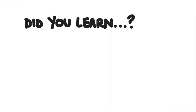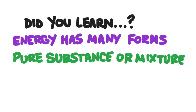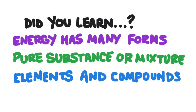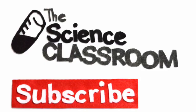So did you learn everything in this video? You learned that energy comes in many different forms. Matter can be found as a pure substance or as a mixture. There are two types of pure substances — elements and compounds. And there are two types of mixtures — homogeneous, which is the same throughout, and heterogeneous, which is different throughout. Thanks for watching. Click to subscribe and learn more science with short, simple video tutorials.